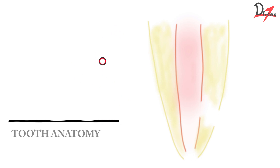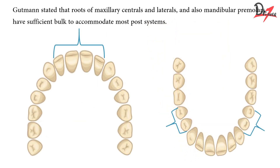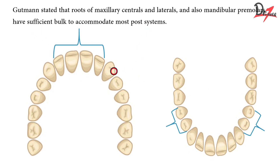The use of grids really helps in determining the correct length, diameter, and design of the post. Gutman stated that the roots of the maxillary centrals, laterals, and premolars have sufficient bulk to accommodate most post systems. However, keep in mind that in incisors, we do not prefer posts unless it is very, very essential.